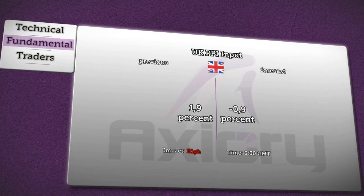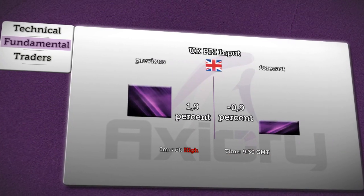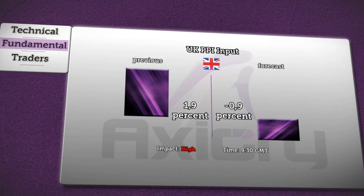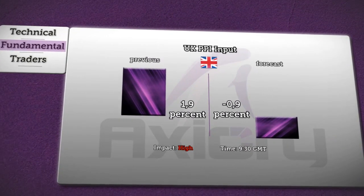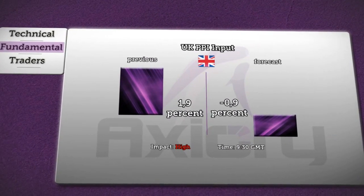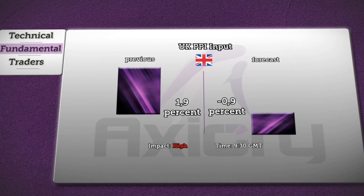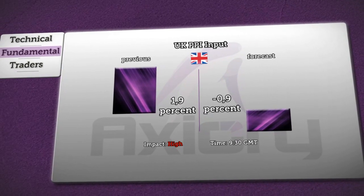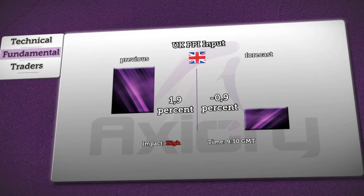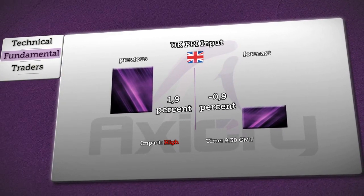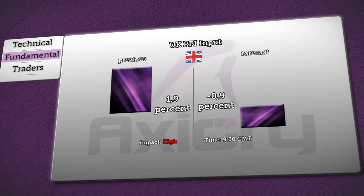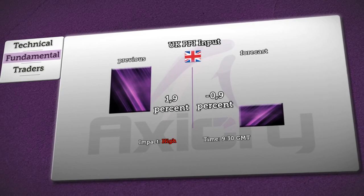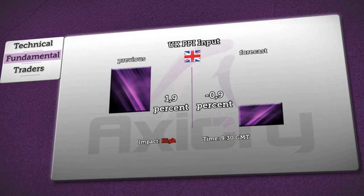The first news will be released by the Office of National Statistics, which will report figures about PPI input in the UK at 9:30am GMT. It's expected to fall 0.9%, compared to a previous 1.9% rise. Also, high impact on the sterling can be awaited.